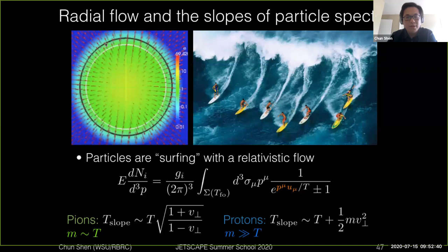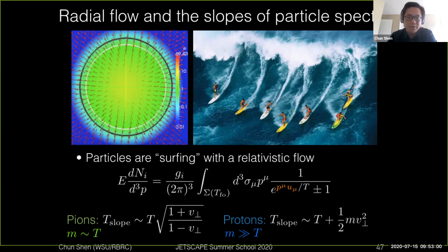If you have a radial symmetry of the density profile, the system will actually expand through hydrodynamic equations, basically serving as a push to the particles as emitted on the hypersurface, indicated by this black solid line here. You can think about this like people surfing on the sea — the water pushes the people to get larger velocities.